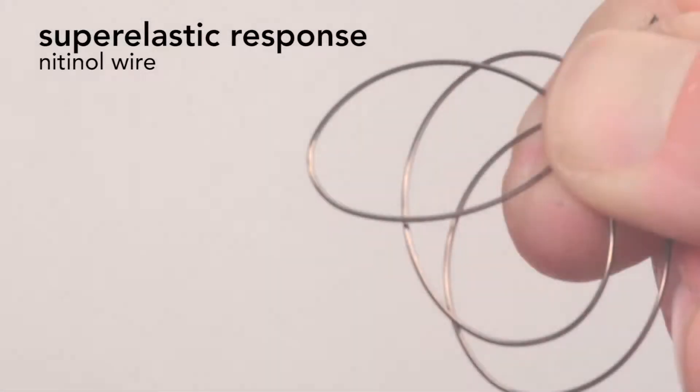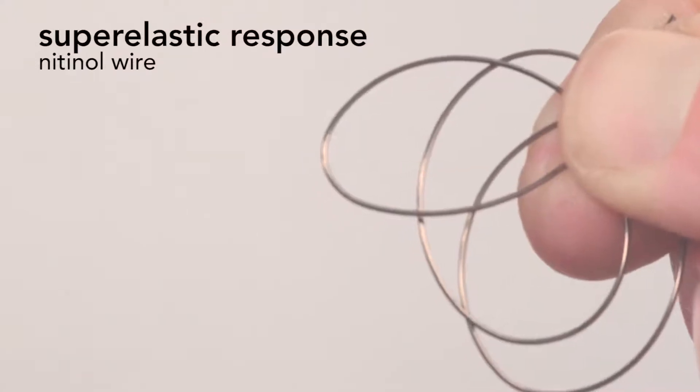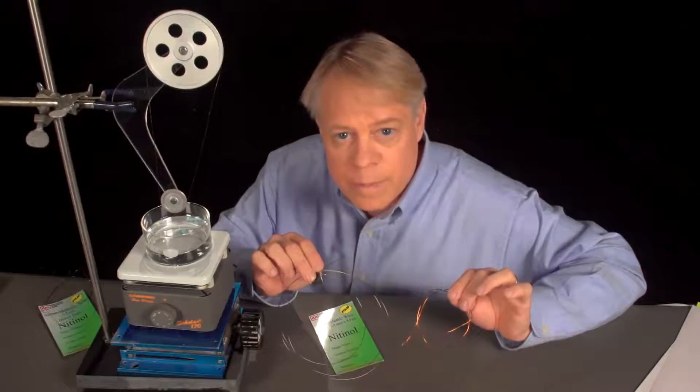If I bend the wire into multiple loops and then release it, it becomes straight. This super-elasticity is closely related to the shape memory effect.